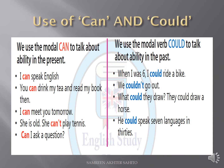Now look at the next column. We use the modal verb 'could' to talk about ability in the past. When we show our ability to do any action, we use 'could' in the past tense. For example: 'When I was 6, I could ride a bike' — it means when I was 6 years old, I had the ability to ride a bike.